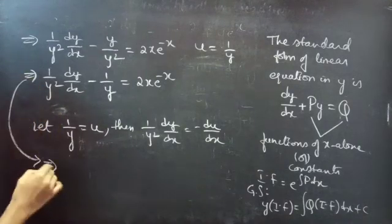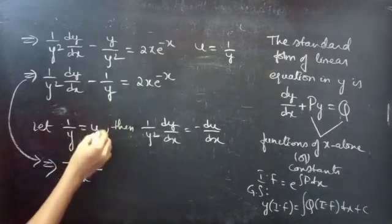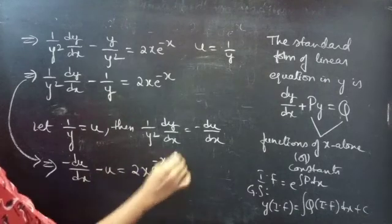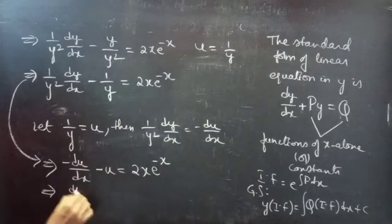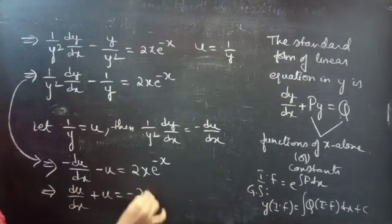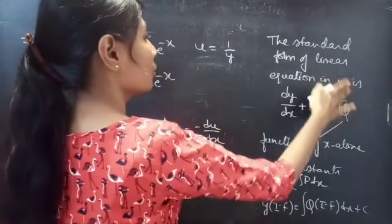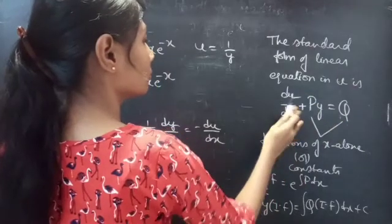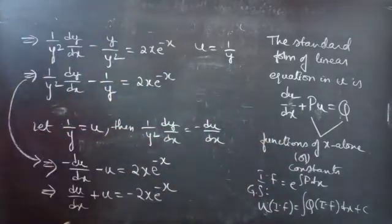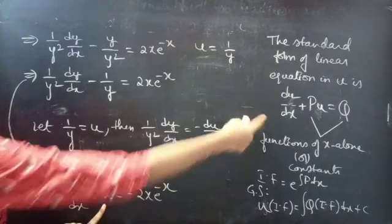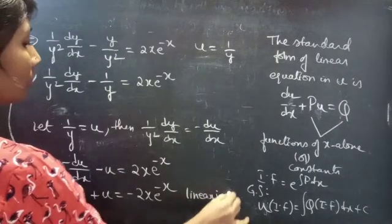The reduced equation du/dx plus u equals minus 2x·e^{-x} is a linear equation in u. Replacing the first term by minus du/dx and 1/y by u gives us this linear form.